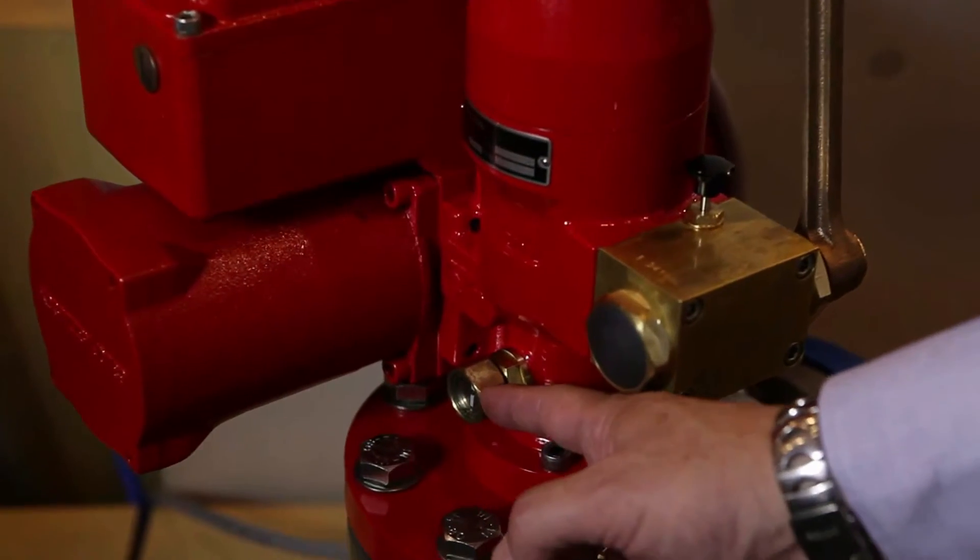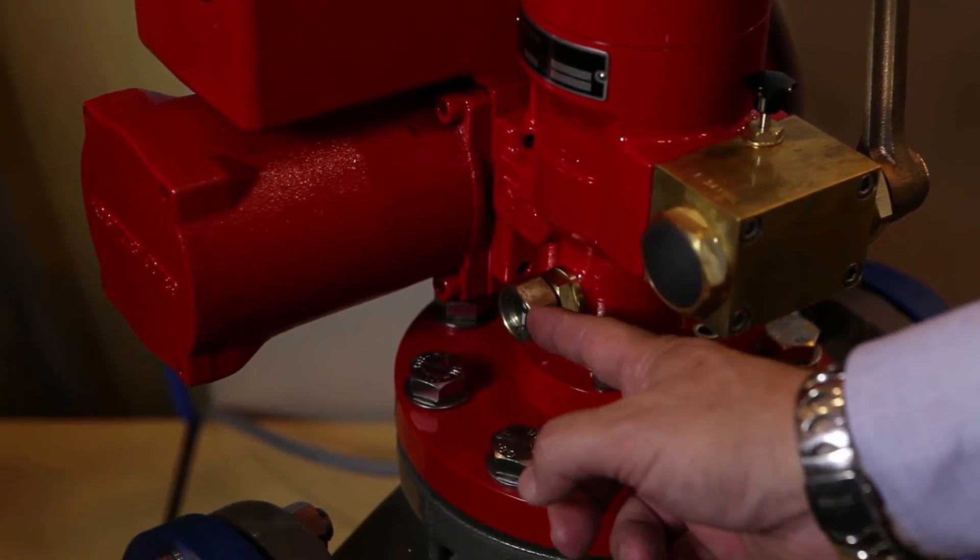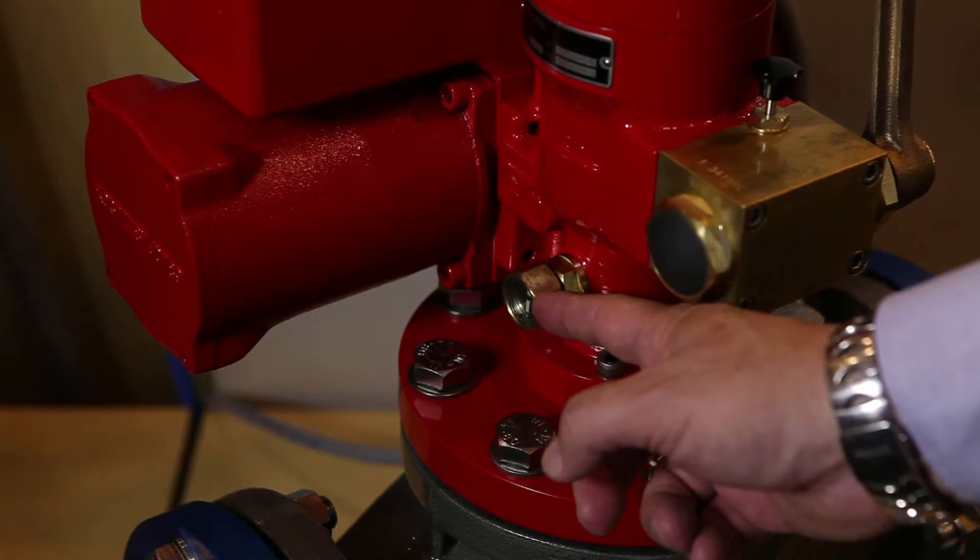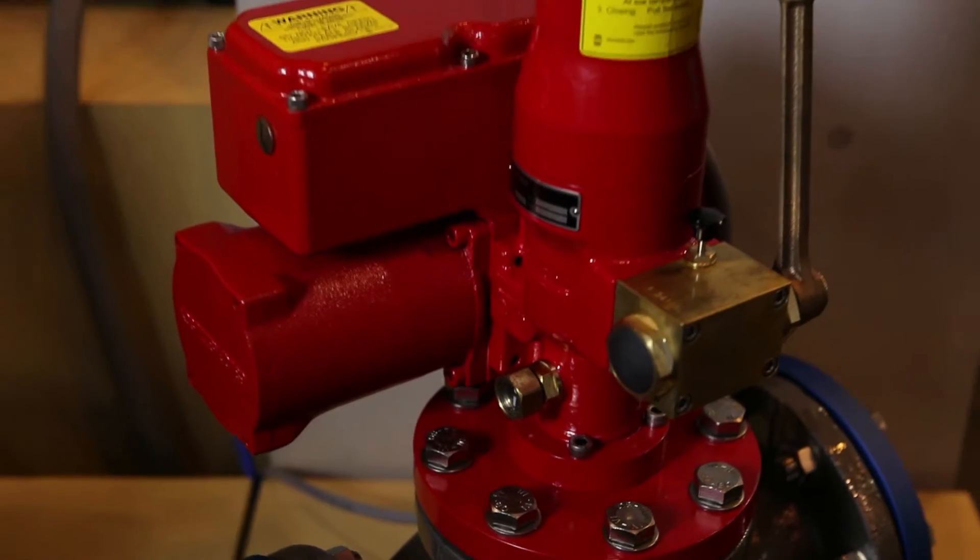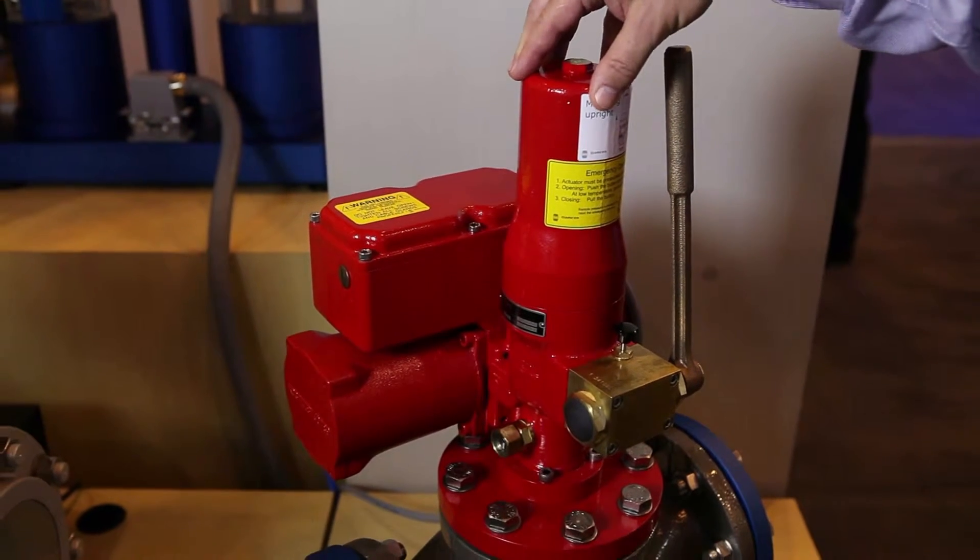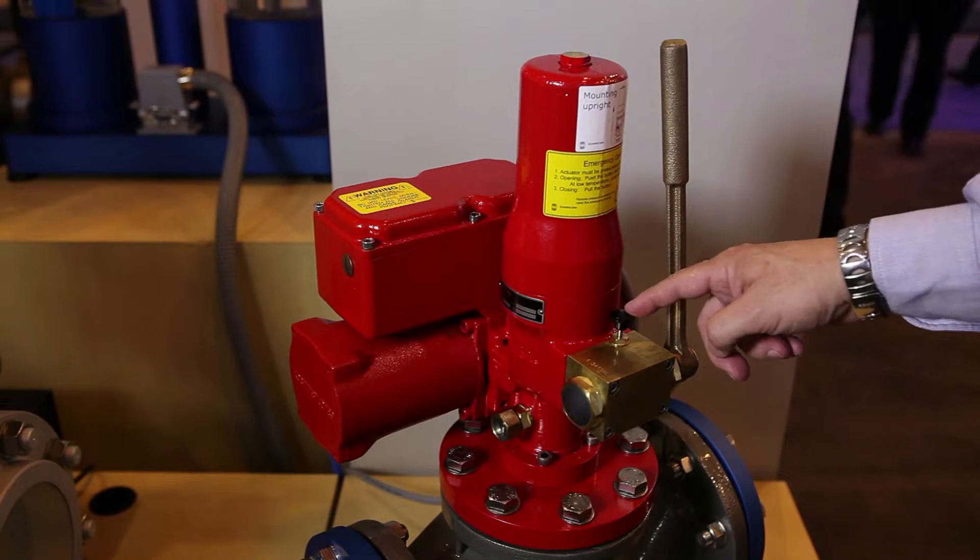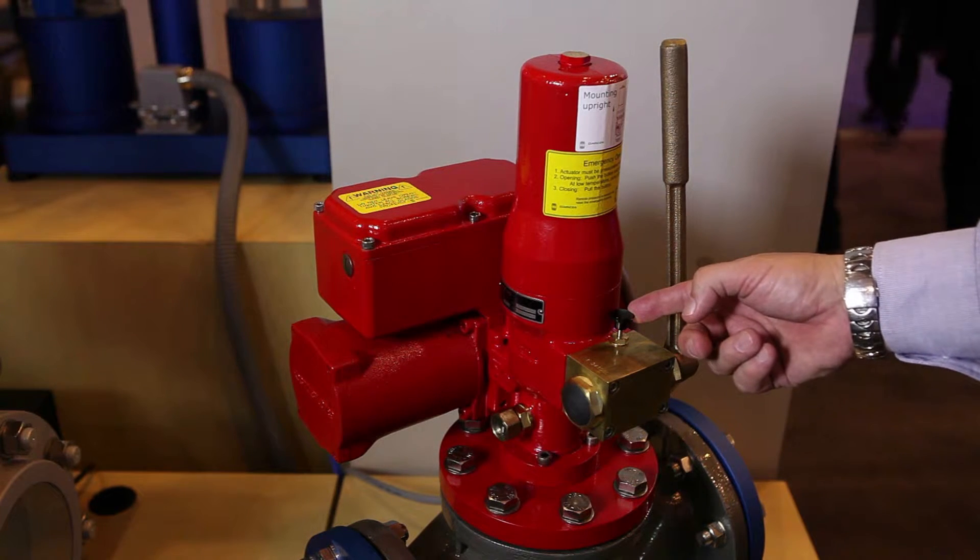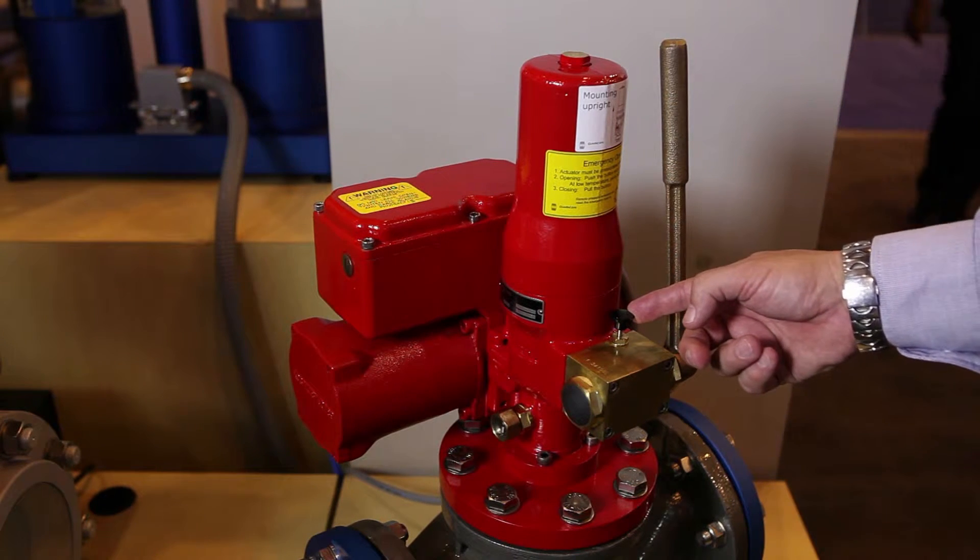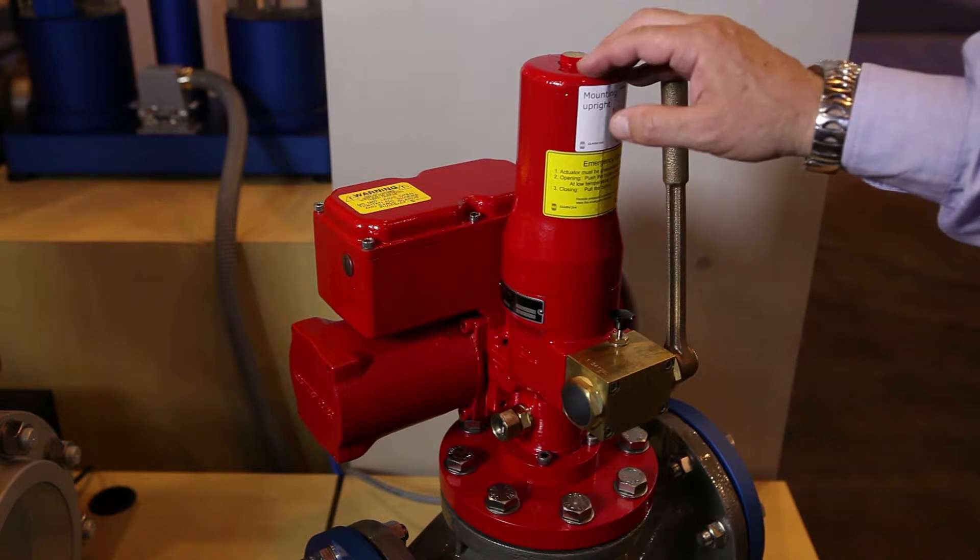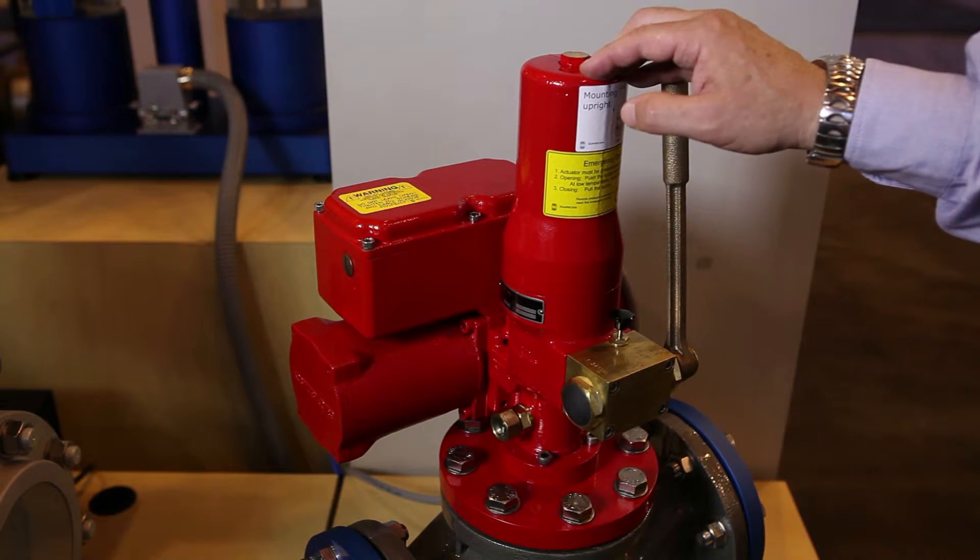Even our linear actuators have local visual position indication like you see here. This indicates that at this moment the valve is closed. And for our KFR actuators, our linear single acting actuators, we have the hand pump feature which can be easily connected by means of this knob and which disengages again as soon as the valve is operated from a remote location.